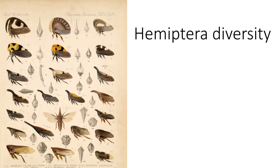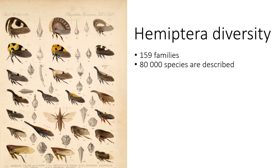Hemiptera is an up-and-coming group. Lots of research is being conducted on them in North America, finding that they are an important grassland species specialist. This means they are a good indicator taxa to tell us if ecosystems are running smoothly. There are 159 families in Hemiptera, 80,000 described species, and 4,200 species in Canada.